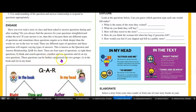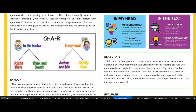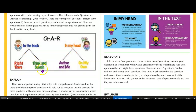The questions can be further categorized into two groups: in the book and in my head. So here we have a little diagram — QAR, question and answer relationship. You have in the book and in my head, four questions. The in the book questions are right there and think and search, and the in my head question types are author and me and on my own.